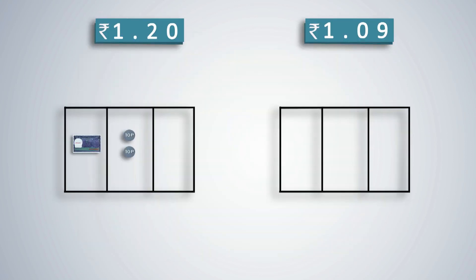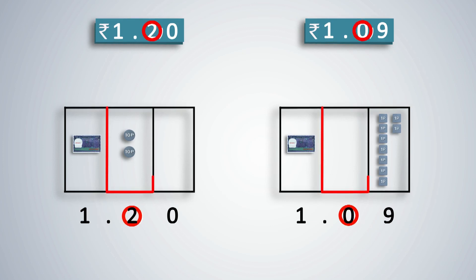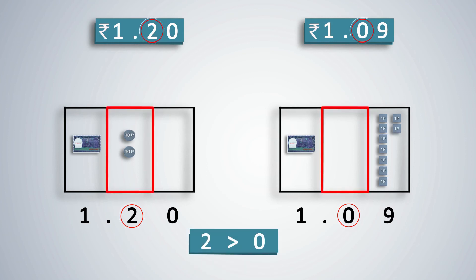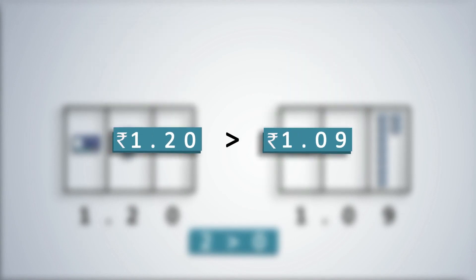How do we tell which is the greater of the two decimal numbers: 1.20 or 1.09? We start with comparing the digit in the highest place value, which is the digit in the extreme left place. Since there is 1 in the units place in both numbers, we move one place to the right and compare the digits in the tenths place. 1.20 has two tenths, whereas 1.09 has no digit in the tenths place. It is evident that 1.20 is the bigger number. Students can verify this by representing both numbers using the strips and squares from the decimal set.